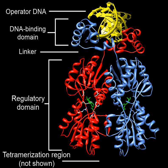The function of TFs is to regulate—turn on and off—genes in order to make sure that they are expressed in the right cell at the right time and in the right amount throughout the life of the cell and the organism. Groups of TFs function in a coordinated fashion to direct cell division, cell growth, and cell death throughout life, cell migration and organization during embryonic development, and intermittently in response to signals from outside the cell, such as a hormone.